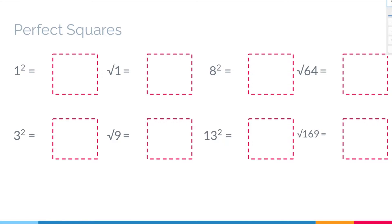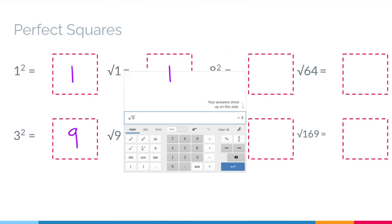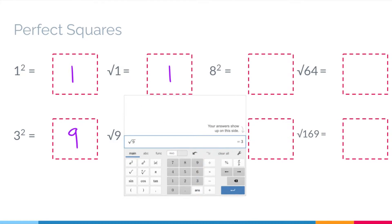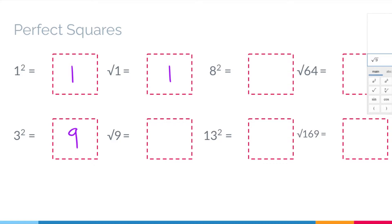Here we have some examples of perfect squares and square roots. One squared — one times one — is one. Three squared — three times three — is nine. The square root of one: what times one equals one? That's one again. The square root of nine may be tricky, so let's pull in the Desmos calculator. I type in the square root of nine and the answer shows up: equals three.